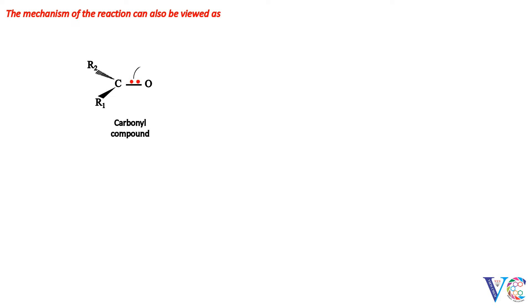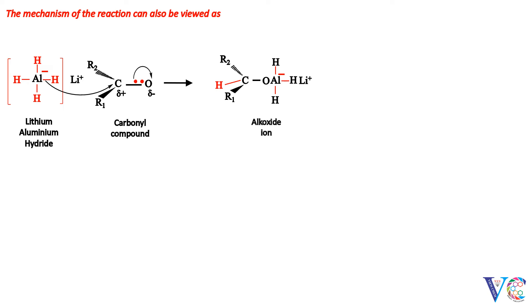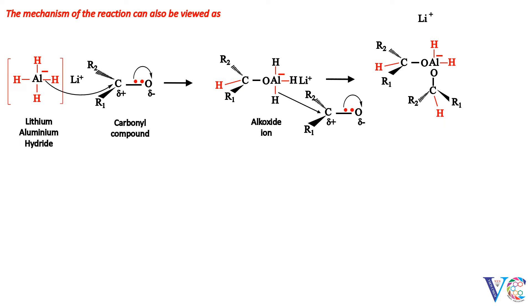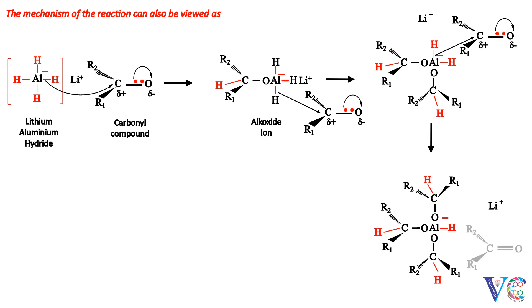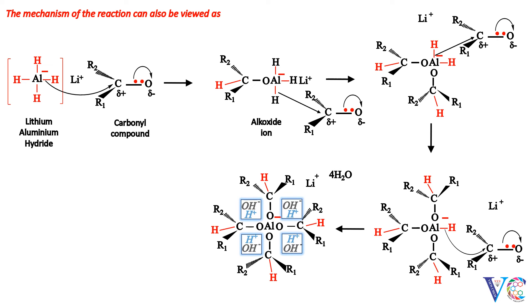The mechanism of the reaction can also be viewed as follows. A hydride ion attacks the partially positively charged carbon of the carbonyl group, forming an alkoxide ion. Next, the partially positively charged carbon of another molecule of carbonyl compound is attacked by a hydride ion. In this manner, partially positively charged carbon atoms of two more molecules of carbonyl compound will be attacked by two more hydride ions. At this juncture, hydrolysis of this complex yields four molecules of alcohol, with the other products being aluminium hydroxide and lithium hydroxide.